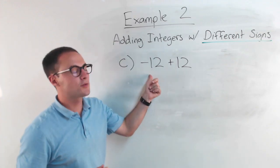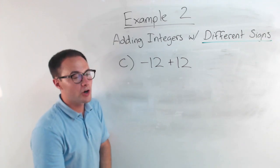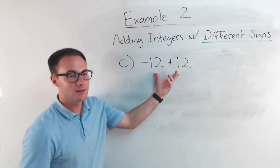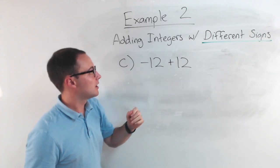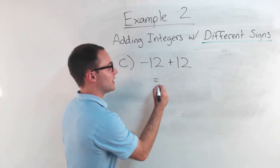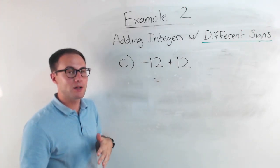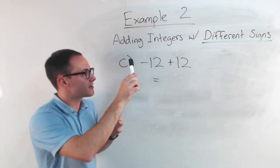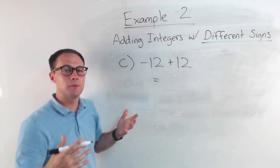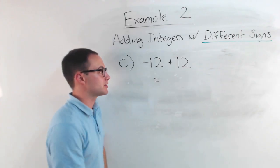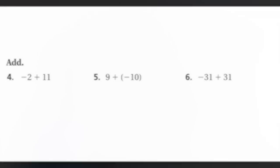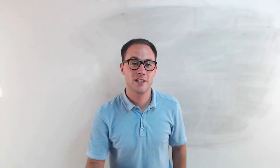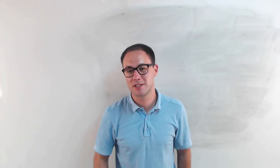This last one: negative 12 plus 12. Hopefully you noticed these are opposites — they're inverses of each other. Using the additive inverse property, anytime you're adding opposites, your sum is going to be zero. So negative 12 plus 12 is zero. Thanks for watching, and if you liked this video, please subscribe.